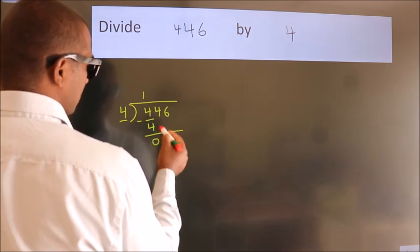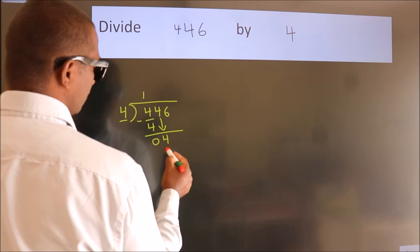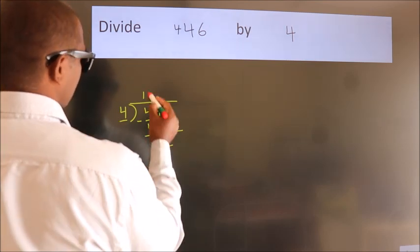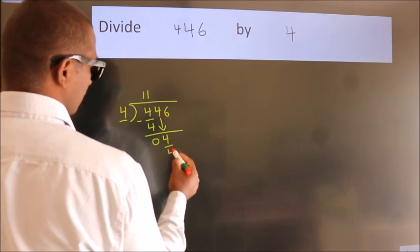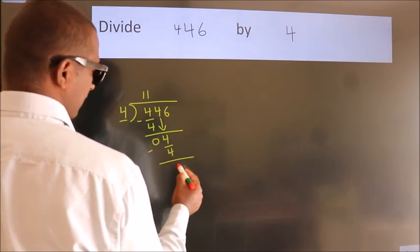After this, bring down the beside number. So, 4 down. So, 4. When do we get 4? In 4 table, 4 once, 4. Now, we subtract. We get 0.